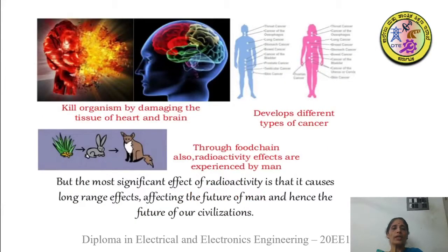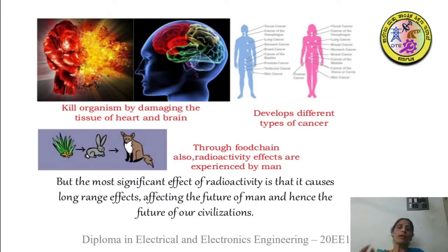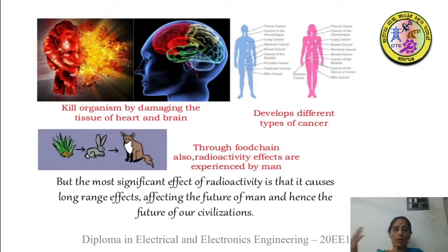Radiation will also kill organisms by damaging the tissue of the heart and the brain, and different types of cancers can develop. Radioactivity can also enter through the food chain — for example, when animals consume radioactive material, and humans eat those animals, the radioactivity effects are experienced by man as well. Therefore, there are long-range effects, and future generations can also be affected. That is why we have to be very careful in disposing of nuclear waste.